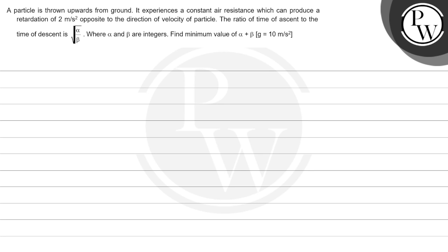The question says a particle is thrown upwards from ground. It experiences a constant air resistance which can produce a retardation of 2 meter per second square opposite to the direction of velocity of particle.